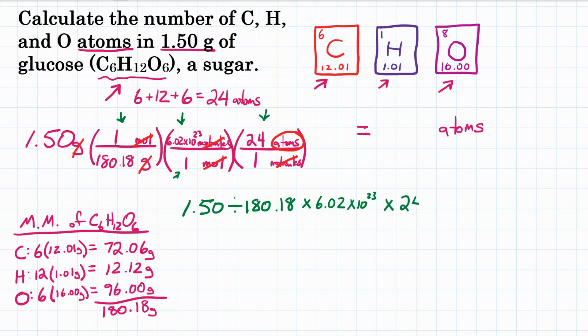The bottom is 1, so it's not going to change anything. If we hit equals here, we should get, for our final answer, 1.20 times 10 to the 23rd atoms. How many total atoms are in 1.50 grams of glucose? That would be 1.20 times 10 to the 23rd individual atoms.